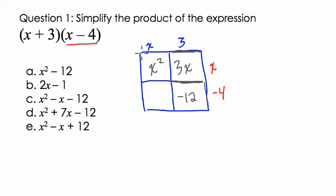Over here, we have a length of x. So the area over here is x by -4, which is -4x.